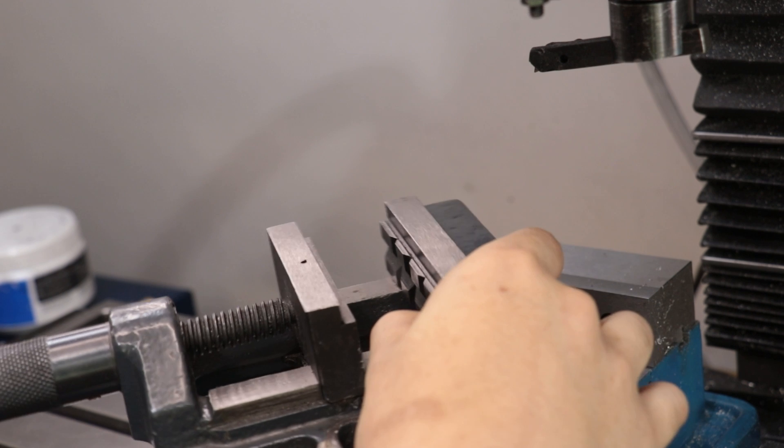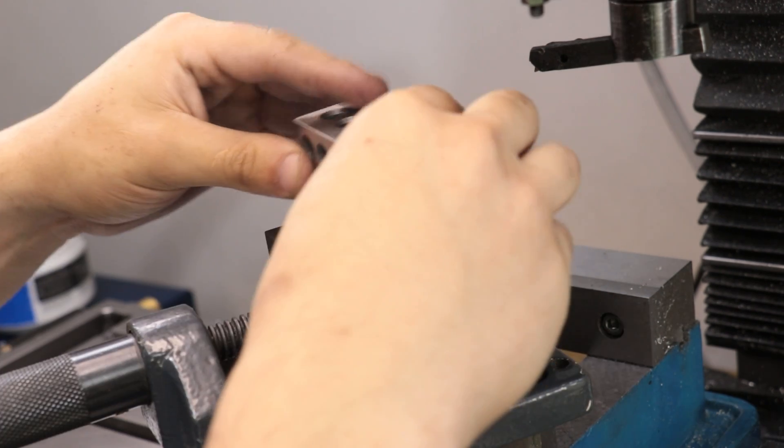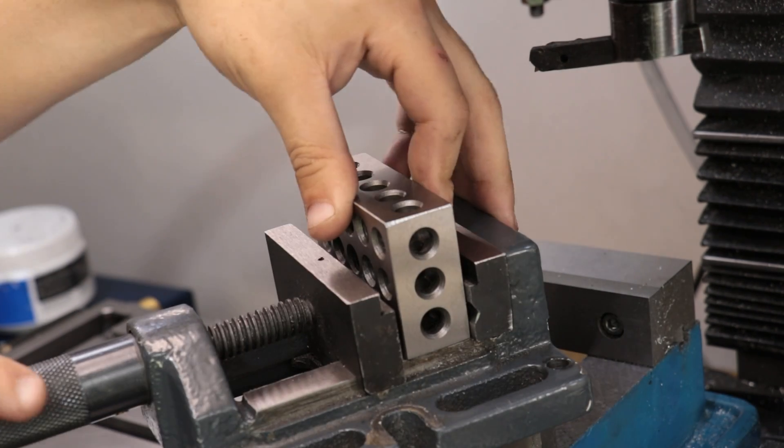The other mistake that I made was assuming that the side faces of the fixed jaws were ground perpendicular to the top, which, unfortunately, they weren't. Considering that I got this vise for free, I probably expected a little bit too much from it, so I had to go ahead and fix it.